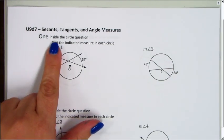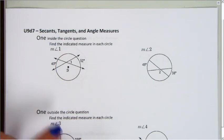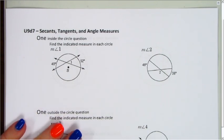So starting with here, we're going to have one question with angles that are inside the circle. We have two examples. Find the indicated measure in each circle, the measure of angle 1 and the measure of angle 2.